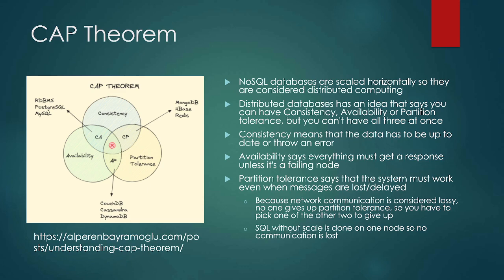Because network communication is considered lossy, no one will give up partition tolerance, so you have to pick one of the other two. When sending information over a network, most of the information gets through, but not always on the first try. You have to make sure enough is getting through to do what you need. People are really not willing to give up partition tolerance — nobody's willing to give up communication between the nodes. So you have to pick availability or consistency.